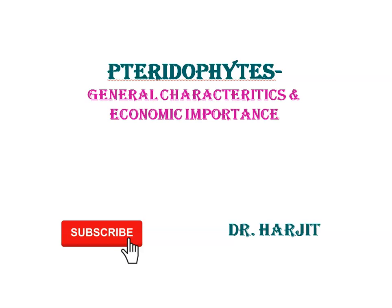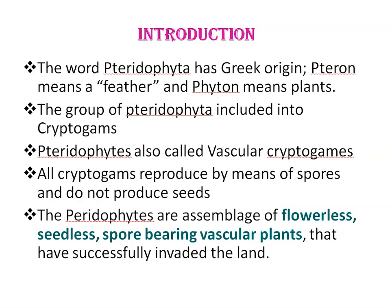Our today's topic is Pteridophytes. In this class we are going to talk about general characteristics and economic importance of Pteridophytes. The word Pteridophyta has Greek origin — 'pteron' means a feather and 'phyton' means plants. The plants of this group, Pteridophytes, have feather-like leaves, for example in the case of ferns. The group of Pteridophyta is included in cryptogames along with algae, fungi and bryophytes. Cryptogames means plants that have no true flowers and seeds.